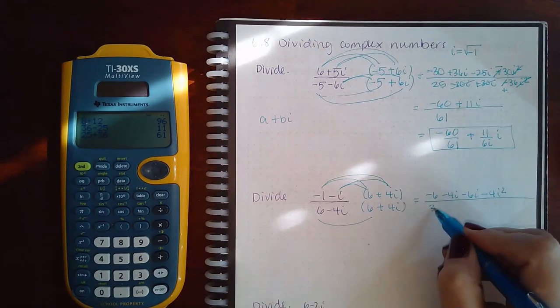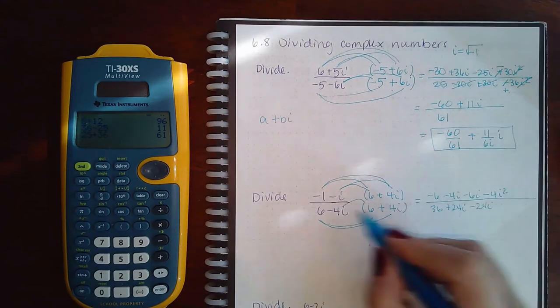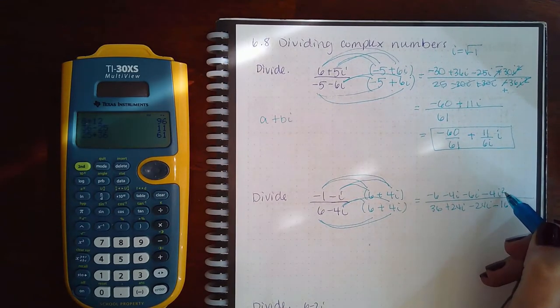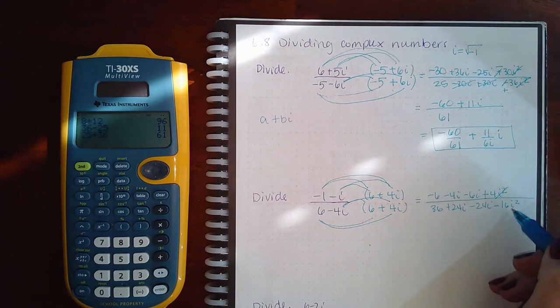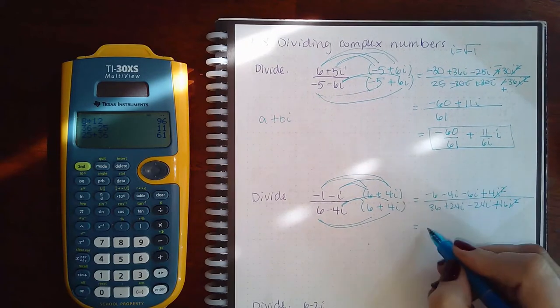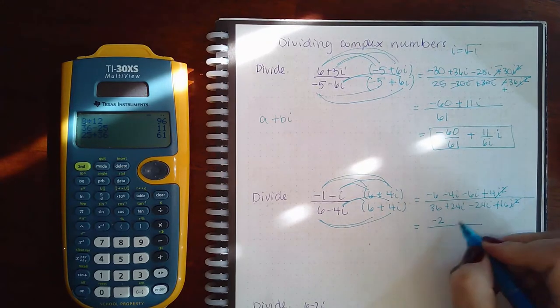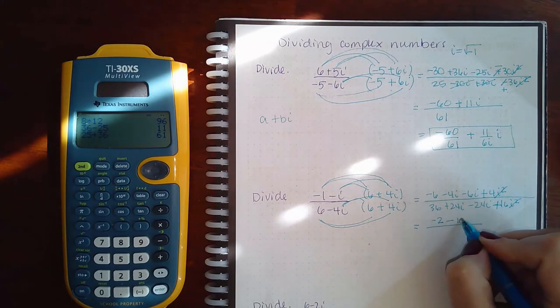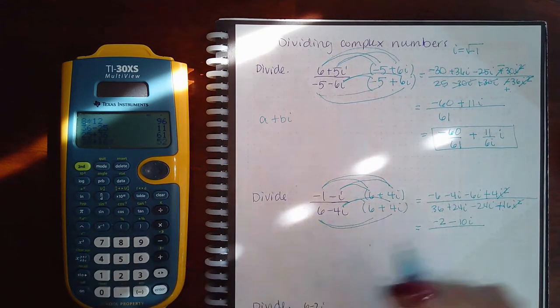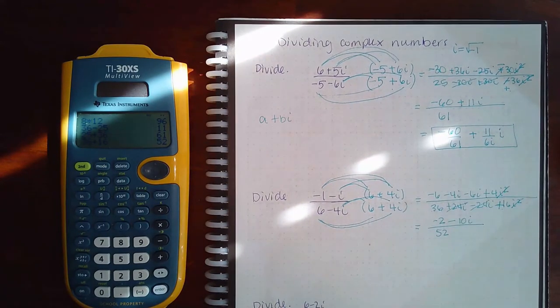The bottom, I get 36 plus 24i minus 24i and minus 16i squared. Remember, i squared is negative 1, so it's going to change that to a plus. Then I'm going to combine my like terms. So negative 6 plus 4 is negative 2, and negative 4i minus 6i is negative 10i. Then here we have 36 plus 16, I get 52. And then negative 24 and positive 24 cancel out.